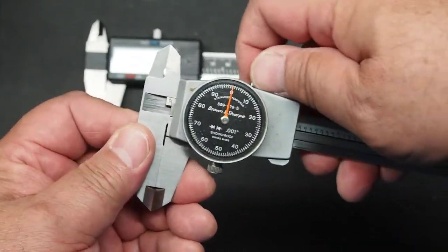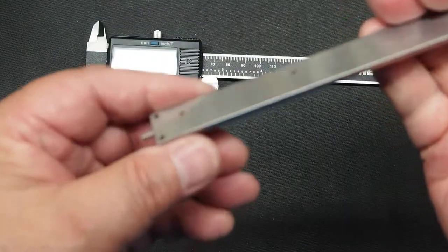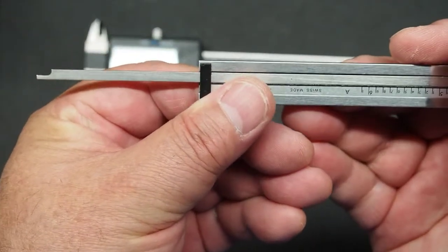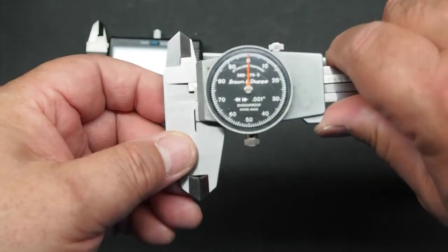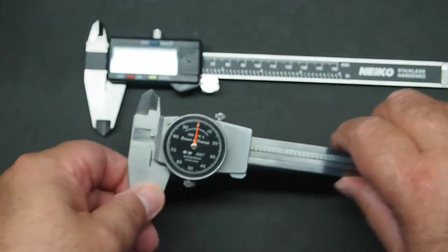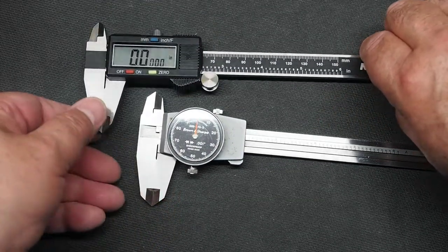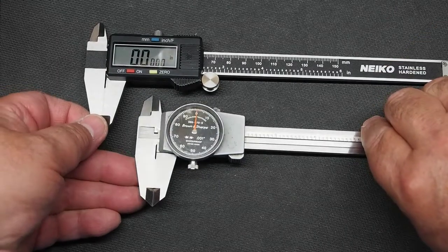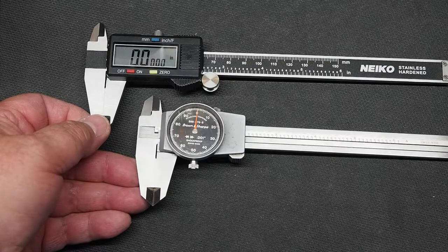So super valuable tool and like I said they all have depth capability so if you want to measure the depth of something you can do that. And that's really valuable as well. So calipers, if you don't have a pair of calipers either the digital or the dial calipers for your home workshop I think it's something you might want to think about getting.